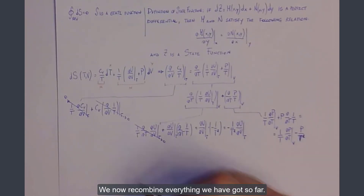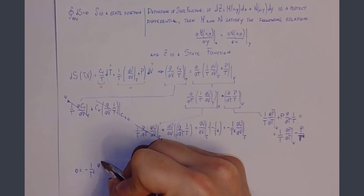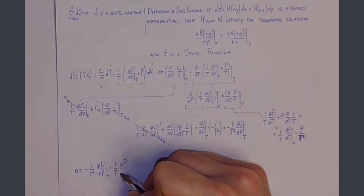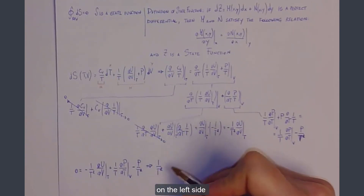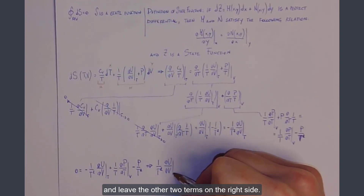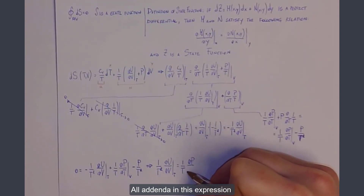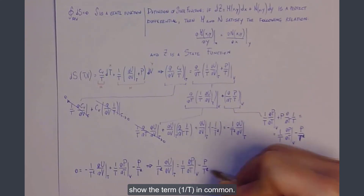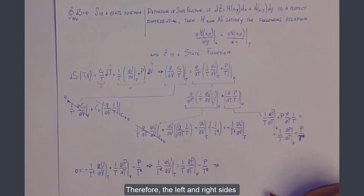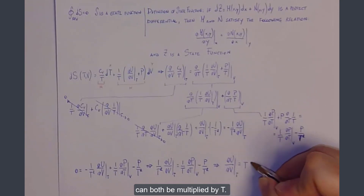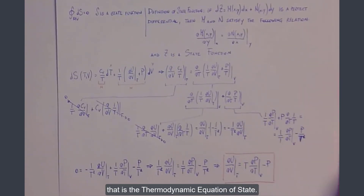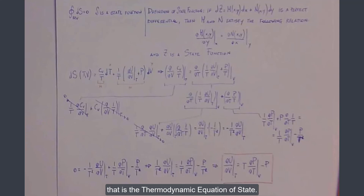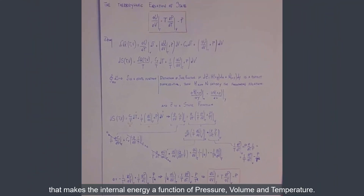We now recombine everything we have obtained so far. We take the differential of the internal energy on the left side and leave the other two terms on the right side. All addenda in this expression share the term 1 over T in common. Therefore, the left and right sides can both be multiplied by T. This simplifies the last expression, which is the thermodynamic equation of state. We now have an expression that makes the internal energy a function of pressure, volume, and temperature.